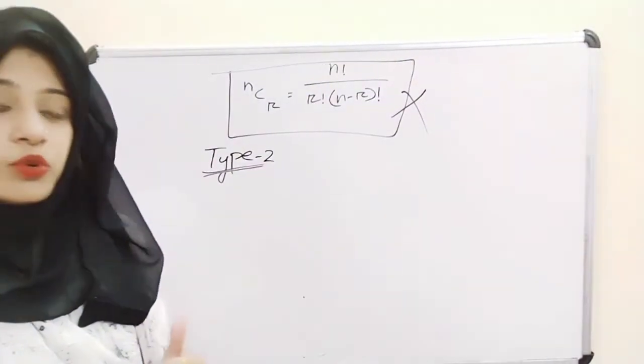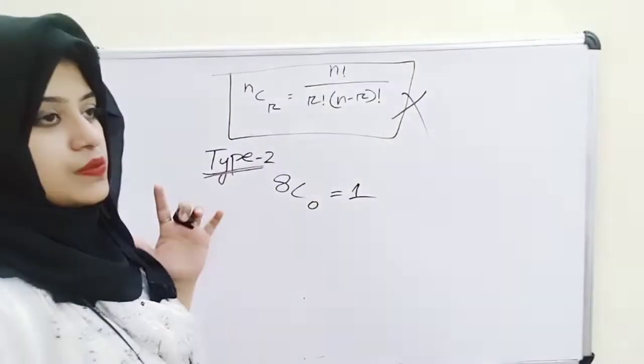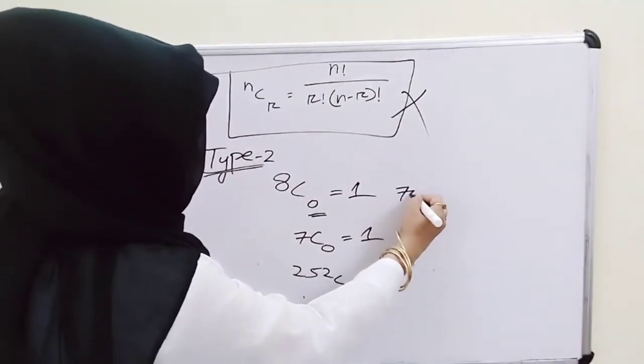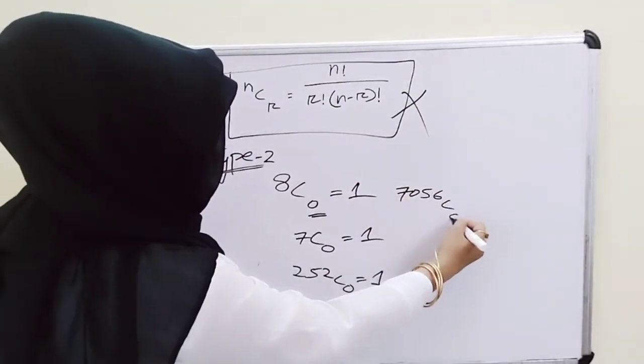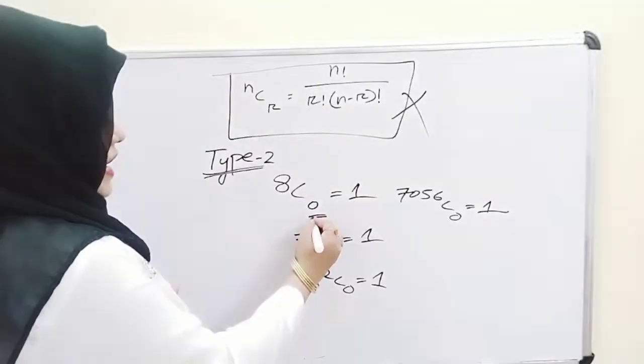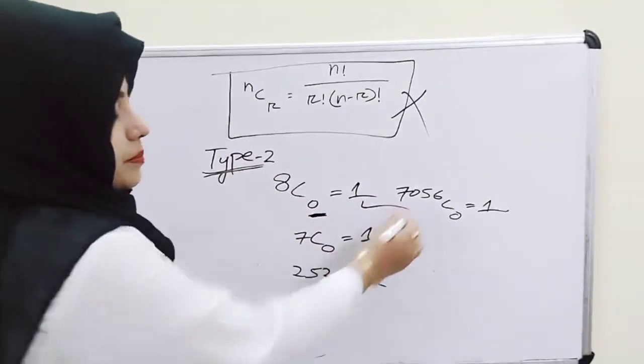Type 2: if your question is 8C0, your answer will be 1 — just like anything to the power 0 is 1. If r is 0, the answer will be 1. For example, 120C0 equals 1 and 305C0 equals 1. So Type 2 is: if r is 0, the answer is 1.